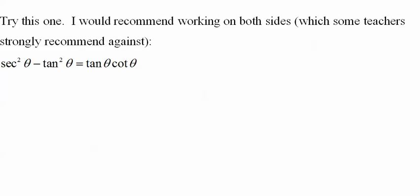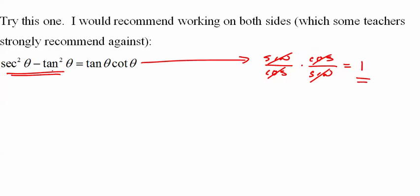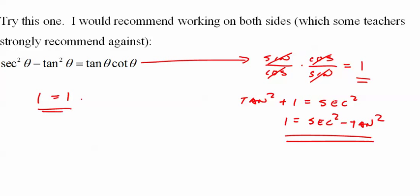Here's another one. This one, go ahead and work on both sides. Most teachers say don't. Most teachers say no, just work on one side at a time. But I look at this and I see sine over cosine times cosine over sine. And I know you're going to end up with one. So let's see if we can make this side equal one. Looks like an identity to me. Tangent squared plus one equals secant squared. If I subtract tangent squared from both sides, I get one equals secant squared minus tangent squared. One equals one. Done.